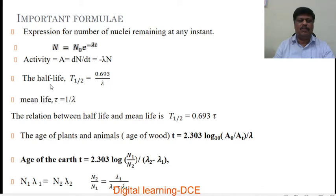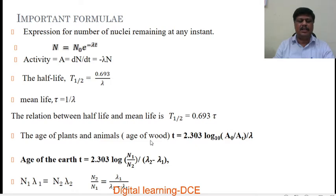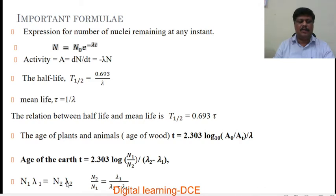The expression for half-life is T½ = 0.693 / λ, and the expression for mean life is τ = 1/λ. The relation between half-life and mean life is: half-life = 0.693 × mean life. The age of dead plants and animals can be calculated using T = 2.303 × log₁₀(A₀/A) / λ. The condition for secular equilibrium is N₁λ₁ = N₂λ₂, and the condition for transient equilibrium is N₂/N₁ = λ₁ / (λ₂ − λ₁).